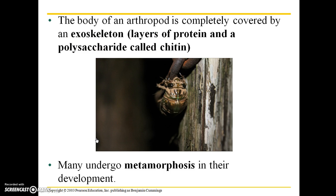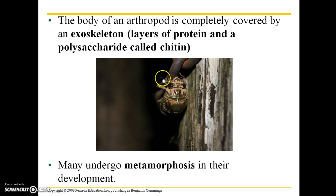Many arthropods undergo metamorphosis in their development. A common example of an insect that undergoes metamorphosis here in Kentucky is the cicada. They spend most of their lives underground as immature or larval cicadas, and when they emerge they leave these shed exoskeletons behind and emerge as the adult winged insect. There are many different types of insects that undergo metamorphosis.